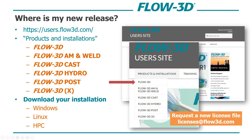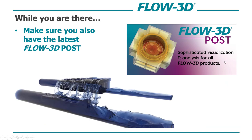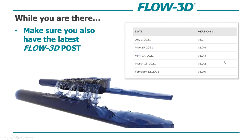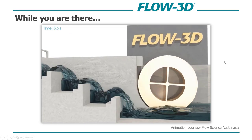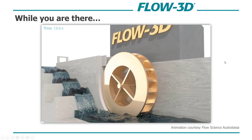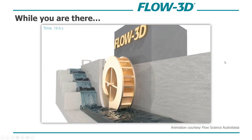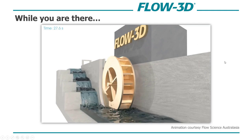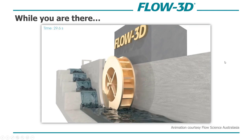Download the installation and get yourself a new license to run the latest versions of Flow3D products. While you're there, make sure you also have the latest Flow3D Post, which is downloadable from the user site. The latest version was released on July 1st last summer. This is what allows you to do wonderful photorealistic renderings, animations, and motion — it's a great post processor.